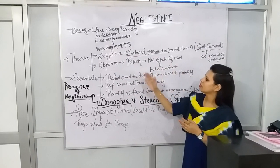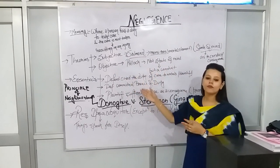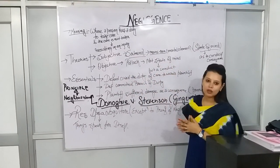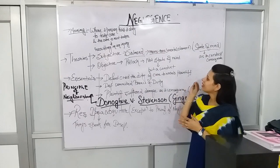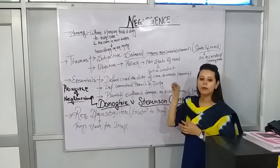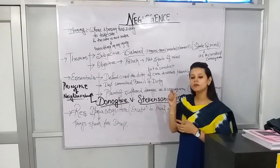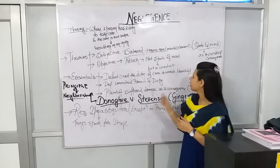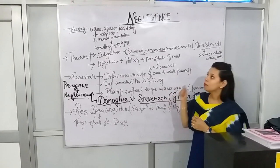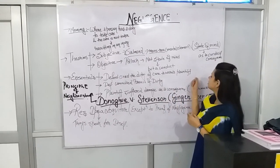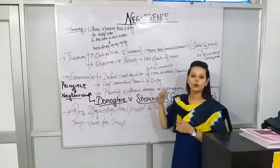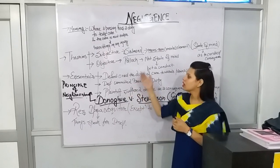As the name suggests, the subjective theory was given by a famous thinker, Salmut. He said that in negligence, mens rea is involved. Mens rea means a mental element — a person's state of mind is involved in doing negligence.